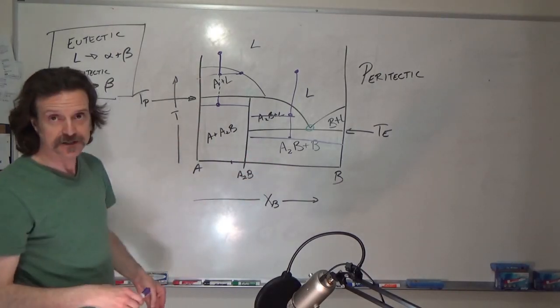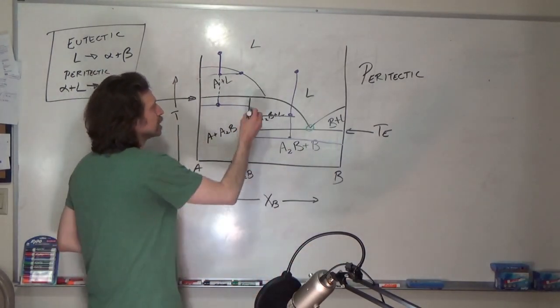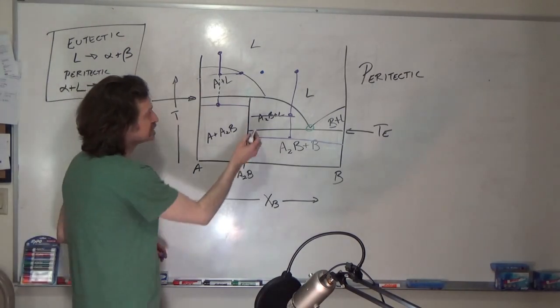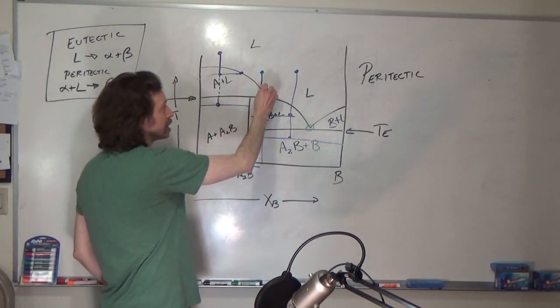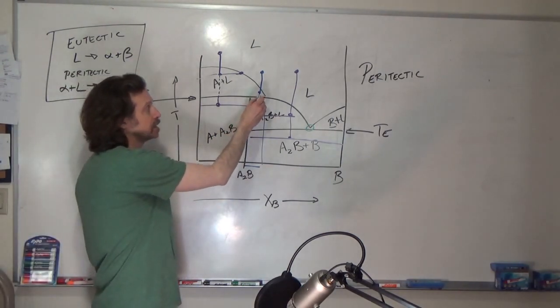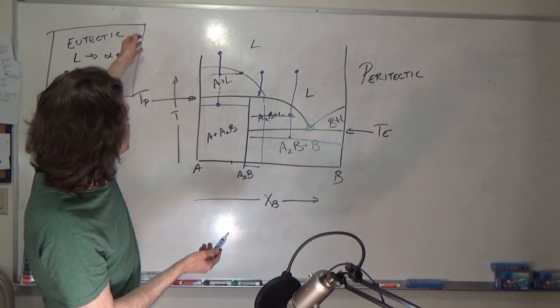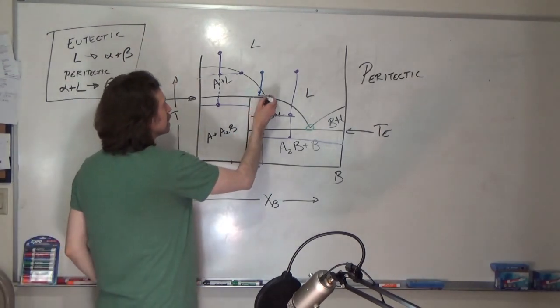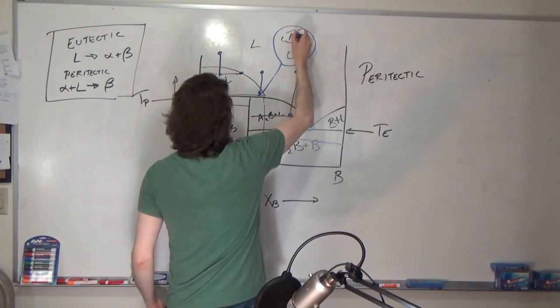The thing that's surprising, and what makes the paratectic kind of interesting, is that between these two points, if you have a composition which sits anywhere in here, as you cool down liquid, you form alpha plus liquid. You keep cooling down, right before you cross the paratectic temperature, you can do your inverse lever rule. You figure out, it looks like, in this case, it's going to be maybe 10% solid, right here, and all the rest is liquid.